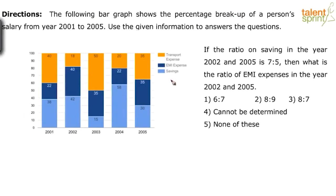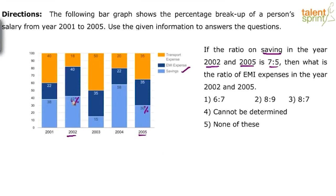Here is the first question. If the ratio of savings in the year 2002 and 2005 is 7:5, then what is the ratio of EMI expenses in 2002 and 2005? Savings we know is the light blue color. In 2002, the percentage of savings was 42%, and in the year 2005 it was 30%. So basically, the ratio of these two is equal to 7:5. We need to find the ratio of EMI expenses for 2002 and 2005.